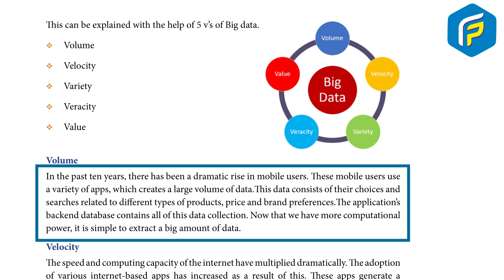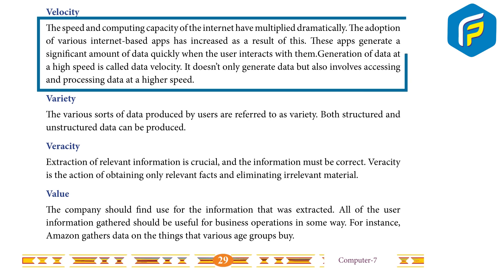This data consists of their choices and searches related to different types of products, price, and brand preferences. The application's backend database contains all of this data. With more computational power, it is simple to extract a large amount of data. Velocity: the speed and computing capacity of the internet have multiplied dramatically. These apps generate a significant amount of data quickly when the user interacts with them.